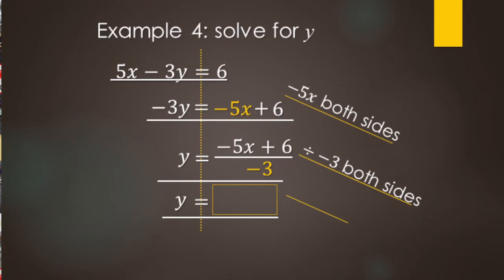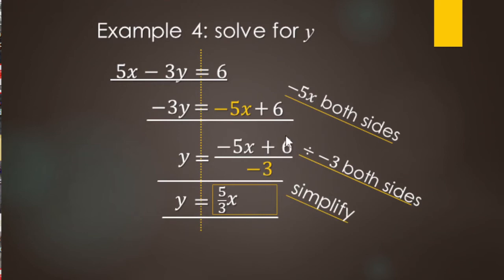Now we can do the division: negative 3 divides into both terms, the negative 5X and the positive 6. Negative 5 divided by negative 3 — negative divided by negative is positive — and since 3 doesn't divide evenly into 5, we get 5/3 X. Then 6 divided by negative 3 — positive divided by negative is negative — and 6 divided by 3 is 2, giving minus 2. So Y equals 5/3 X minus 2. Both forms of the answer are equivalent; this simplified form is slope-intercept form, but you might see either version on a multiple-choice test.